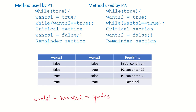P1 executes: wants1 is set to true, while wants2 is still false. The condition 'while wants2 is true, do nothing' is checked — since wants2 is false, P1 comes out of the loop and can enter the critical section, then changes wants1 back to false.